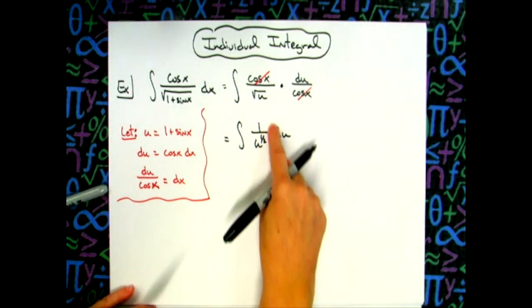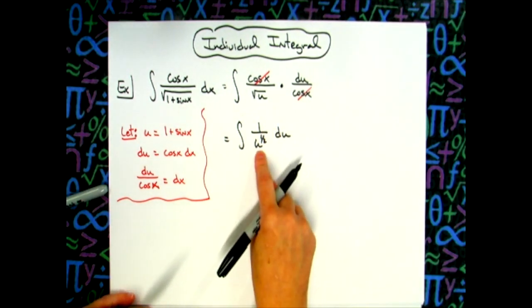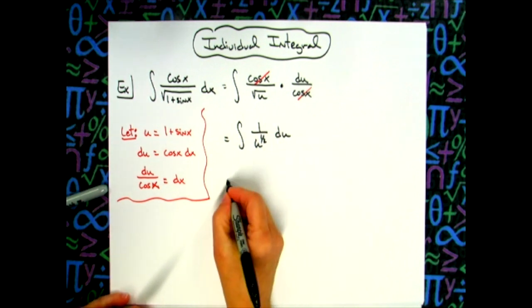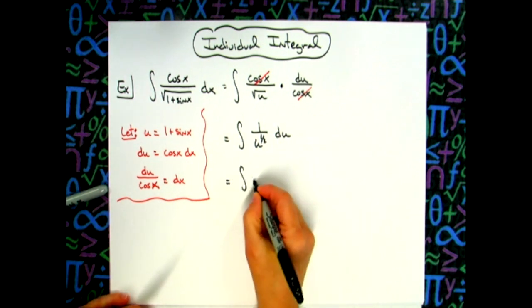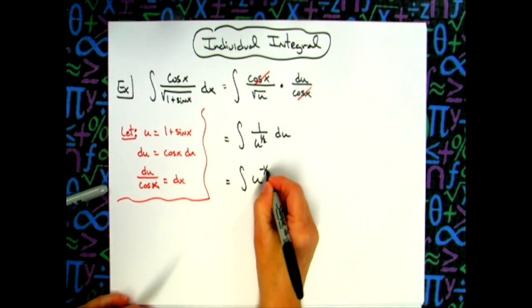I'm going to implement laws of exponents here. I'm going to move that u to the one half up and make it negative. So then I'll have the integral of u to the negative one half power du. And I am now finally ready to integrate.